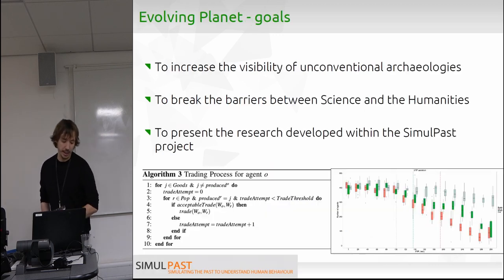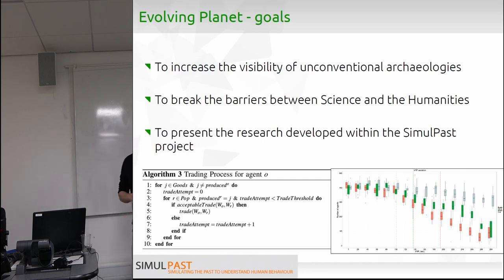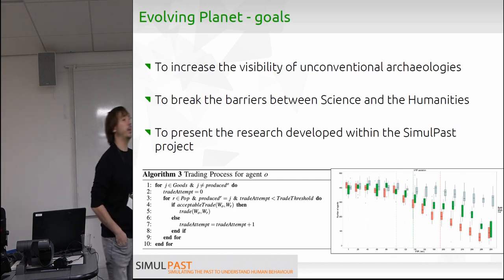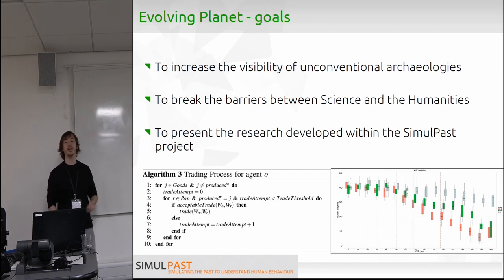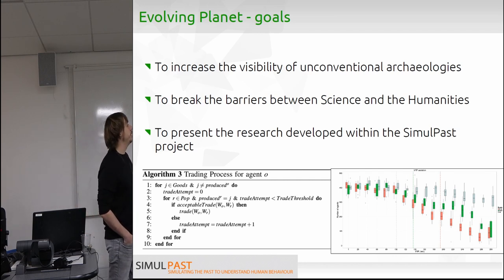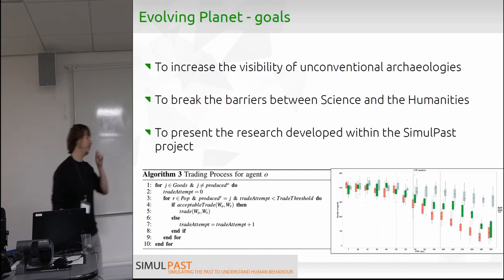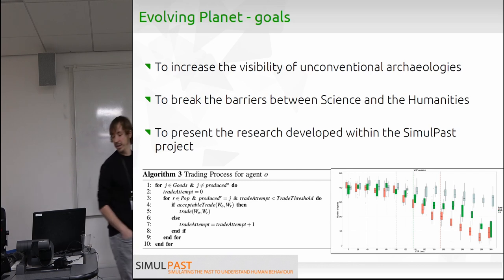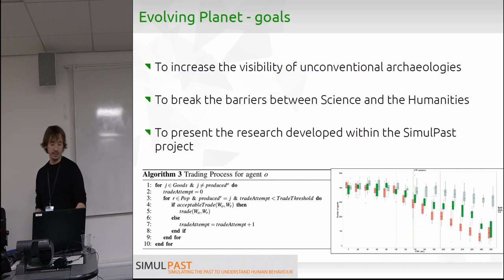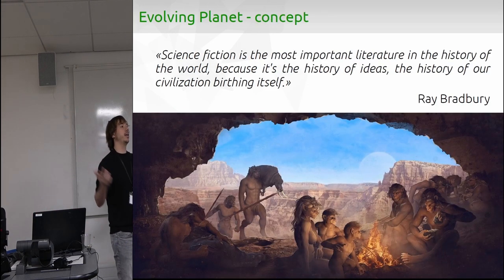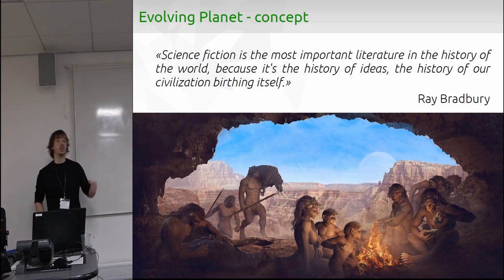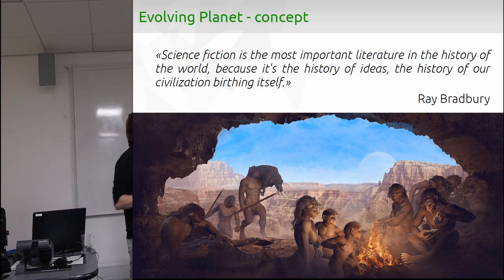The first case study is called Evolving Planet. We had a project called SimulPath — a project about simulation in archaeology, not really mainstream archaeology — and we wanted to explain that. The output from simulations in archaeology is not very appealing for general audiences, so we decided to create a video game that uses simulation to learn about the past, based on the idea of science fiction. In this game, you arrive at a place where a hominine alien species was extinguished, and you need to use archaeology and simulation to learn what happened there and why they became extinct.